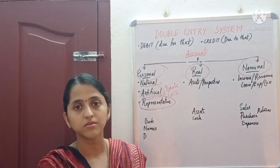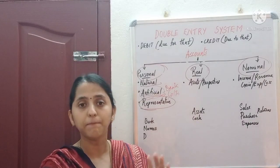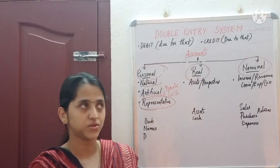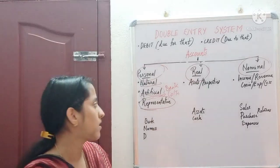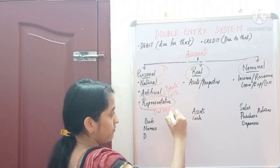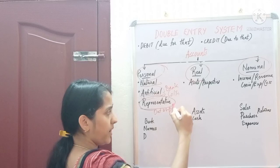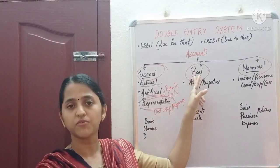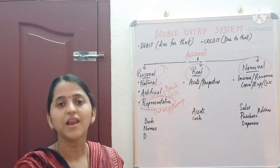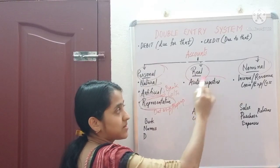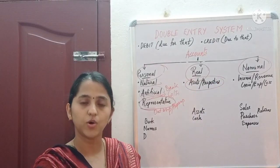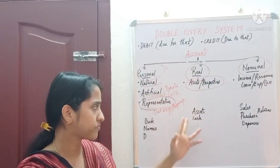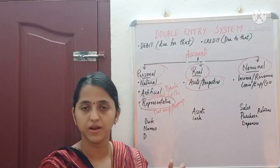The third sub-type is representative personal account, which means accounts that represent a person. It is usually related to a person but is not actually a person — it is a representation. Examples of representative personal account include outstanding expenses and prepaid expenses. The next type is real account, which means accounts of assets or properties of the business, such as fixed asset account, machinery account, or land and building account.